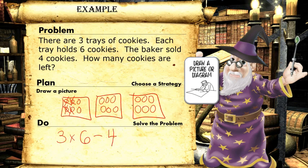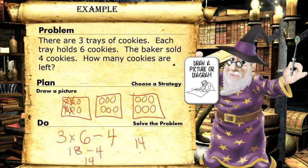If we do the math, we get three times six — 18 — and then 18 minus four is 14. There's our answer: 14 cookies.